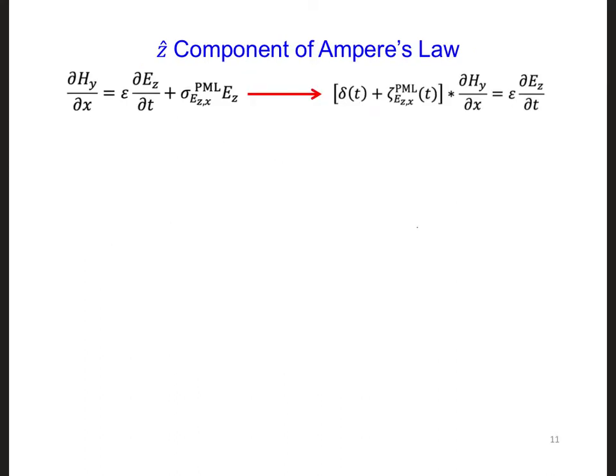So now for Ampere's law, what we started off with was this. Before we started manipulating it and introducing s and zeta, now we have the Dirac delta function plus zeta, and we need to take the convolution of that with d hy d x. So this is the new form of the z component of Ampere's law.